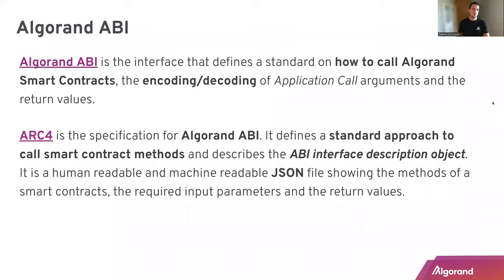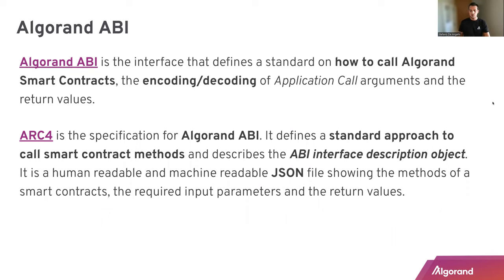Algorand ABI has been introduced with the ARC-4. The ARC is Algorand Request for Comments, which is a repository of standards held by the community, where they discuss about possible improvements or application use cases on the Algorand blockchain. And the ABI has been the result of ARC-4. This standard defined an approach to code smart contract methods and also introduced this kind of new concept of ABI interface description object, which is a human and machine readable JSON file showing all the methods of a smart contract and the required input and return values.